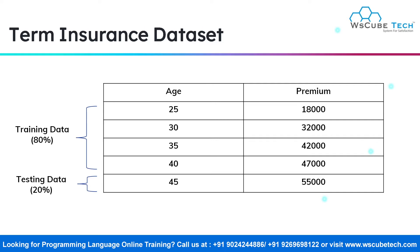If you train your model using the entire dataset and during the test phase you provide samples from the same dataset, what's the point? Your model will definitely give high accuracy in that case. So it's not a good practice to train your model on the entire dataset. Also, if you train on one dataset and test on a completely different dataset, it might create difficulties for the model to understand the correlations. Therefore, it's necessary that we split our dataset into training and test sets.